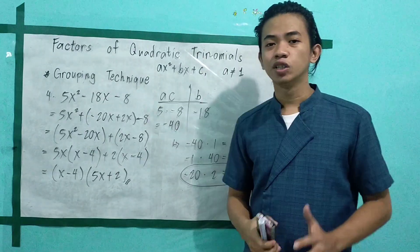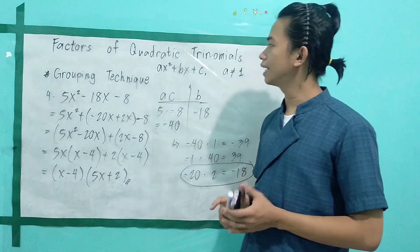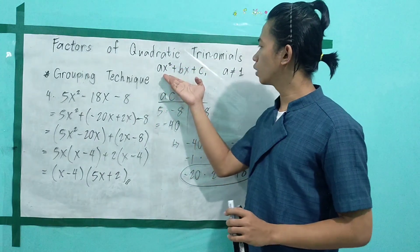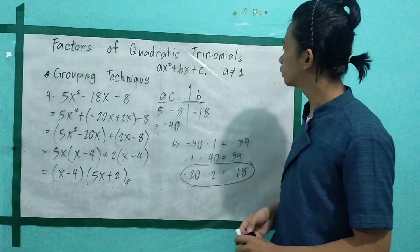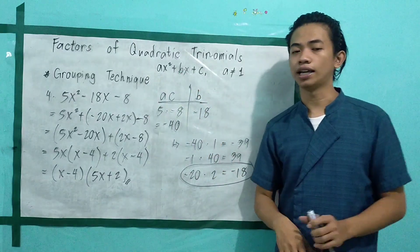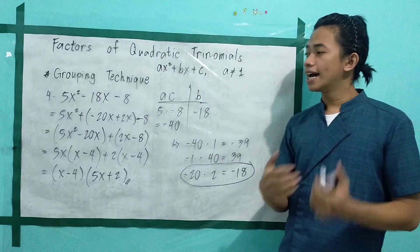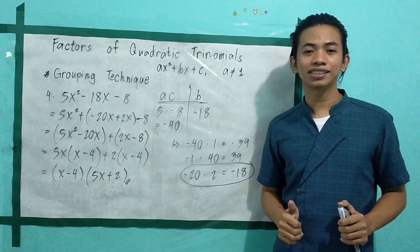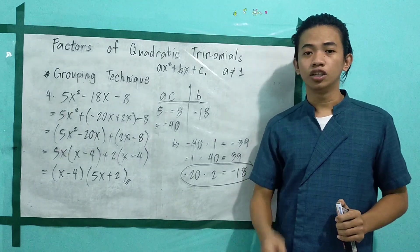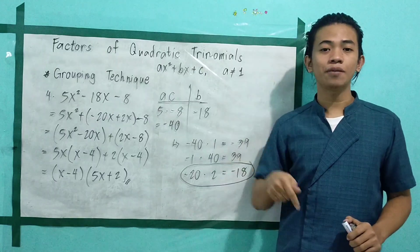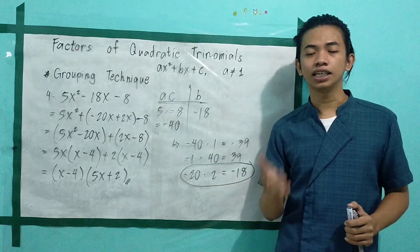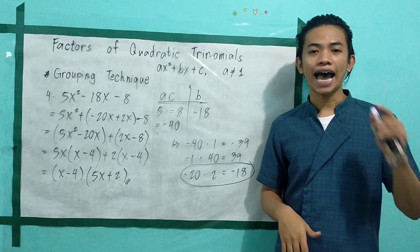That is the grouping technique in factoring quadratic trinomials in the form ax squared plus bx plus c, where a is not equal to 1. We're done. I hope you learned something from this video. Don't forget to like, subscribe to my YouTube channel, share with your classmates, and if you have clarifications, ask your teacher. See you next time!